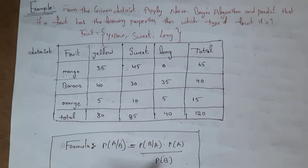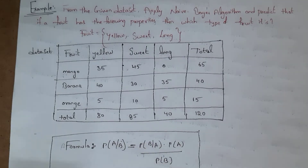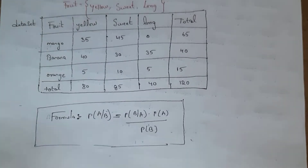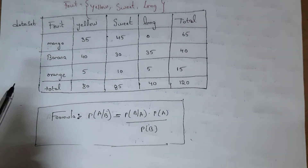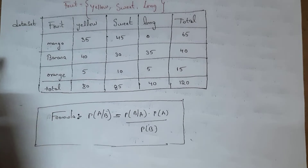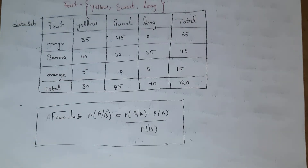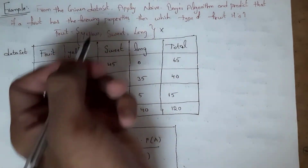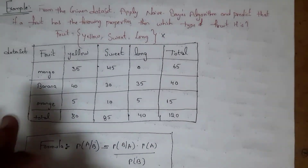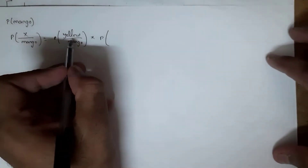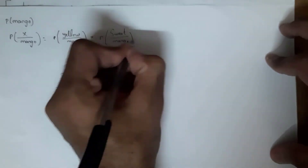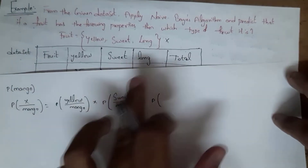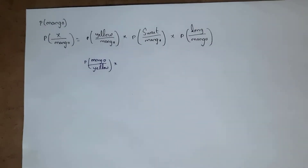Using Bayes' theorem formula — P(A|B) = P(B|A) × P(A) / P(B) — let the new fruit be X. The probability of X given mango equals: probability of yellow given mango, multiplied by probability of sweet given mango, multiplied by probability of long given mango. We apply Bayes' theorem to each of these three terms.